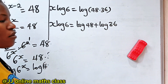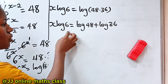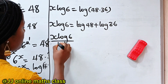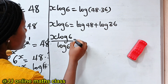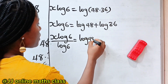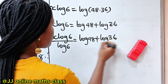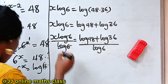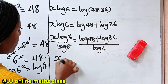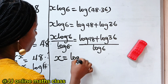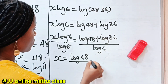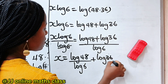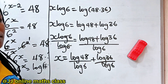Now remember that we are looking for the value of x, so let's divide both sides of this equation by log 6. We have x·log 6 divided by log 6 is equal to log 48 plus log 36 divided by log 6. Log 6 divides itself to give us 1, and we have x is equal to log 48 divided by log 6 plus log 36 divided by log 6.